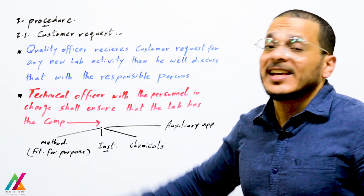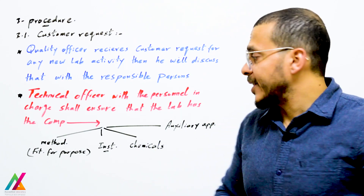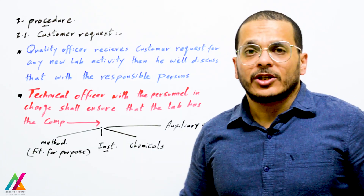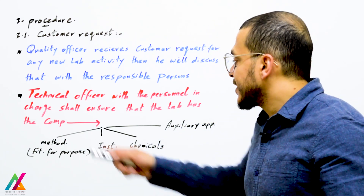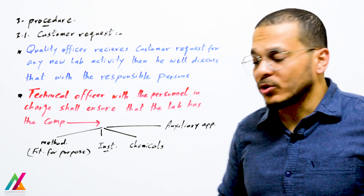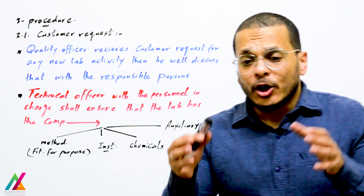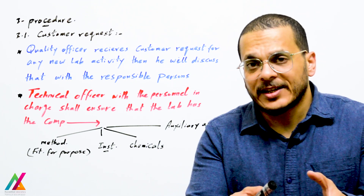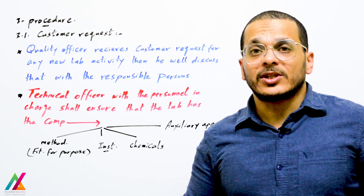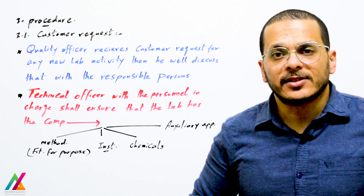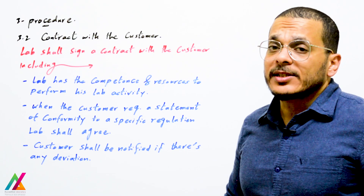These competence and resource checks include: the method, which must be fit for purpose and appropriate to analyze the parameters in the specific matrix; the instrument, which must be fit to analyze those parameters using the method; all chemicals required for this type of analysis; auxiliary apparatus; and quality control procedures followed in the lab for this type of analysis, according to ISO IEC 17025:2017 and other international guidelines. The second point in the procedure is the contract with the customer — the lab shall sign a contract with the customer.